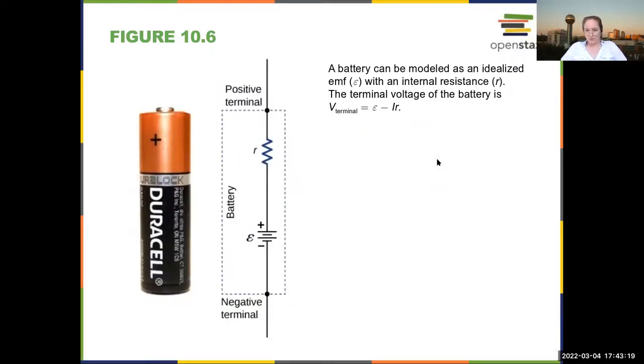You can model a battery as being a combination of a voltage source and a small internal resistance. No battery can provide an infinite amount of power. You'll notice even if you feel batteries after you've been using them, they're warm. You model this as having a small internal resistor, and that gives you a reasonable mathematical way of describing the energy losses.